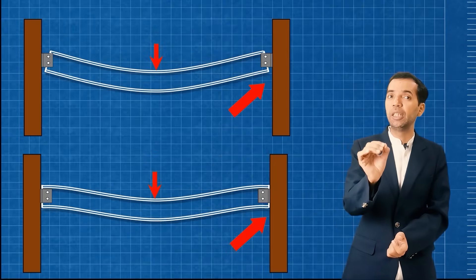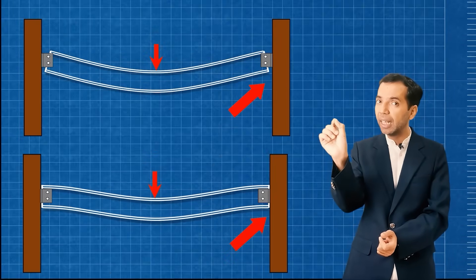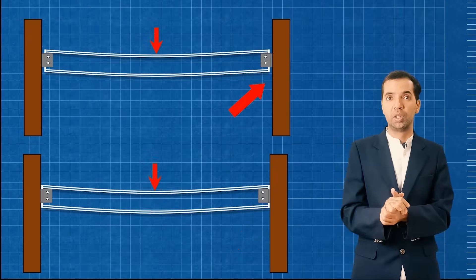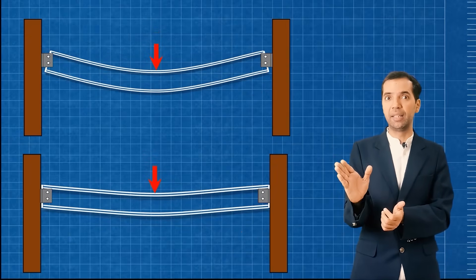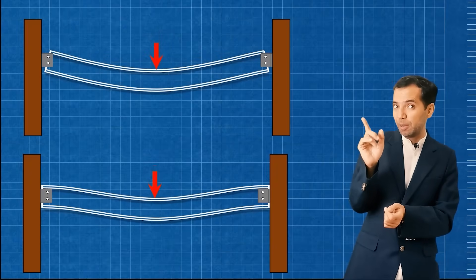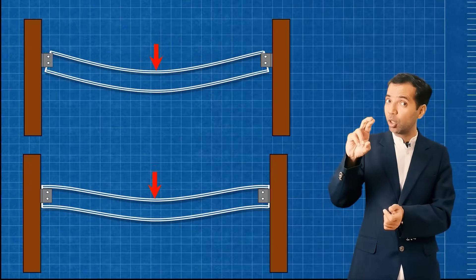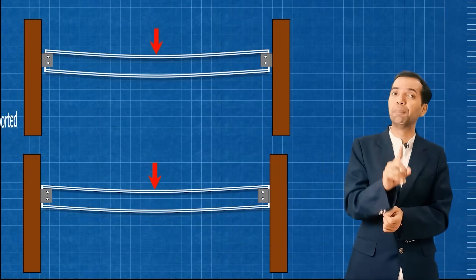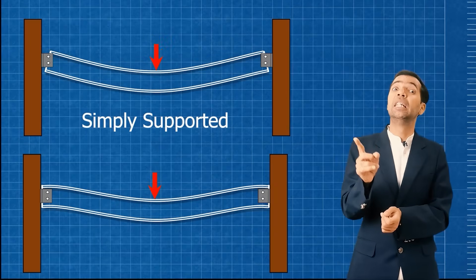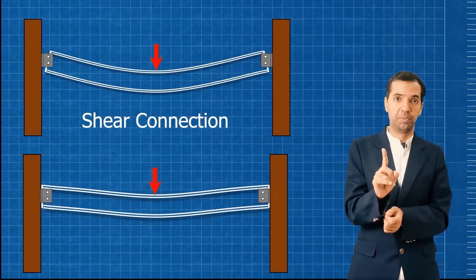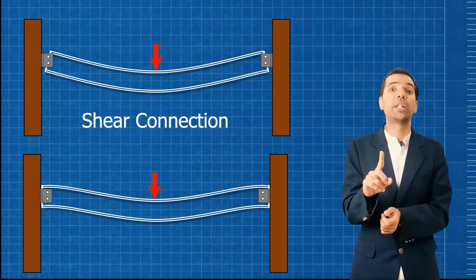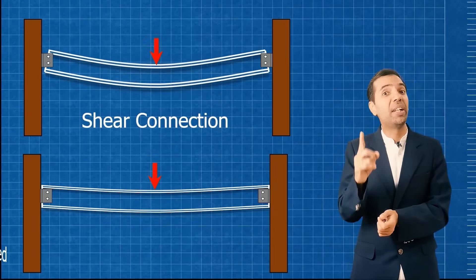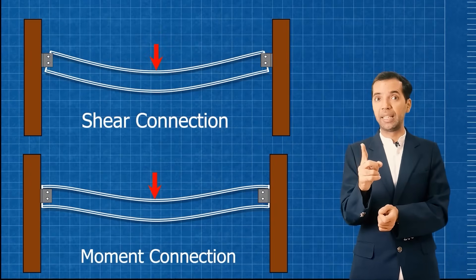It is as simple as that — you just need to look at the space at this particular location. This is the important point, the main point to identify: if there is a space, then it can rotate, that means it is simply supported — which we call shear connection. But if there is no space, then it cannot be rotated, then it is fixed — that means moment connection.